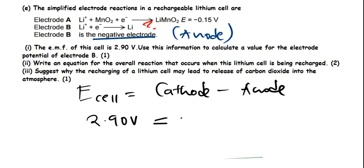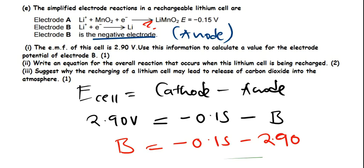The formula for determining the E cell or EMF is cathode minus the value of the anode. The E cell is 2.90 volts. The cathode is the other one, -0.15 volts. And for the anode, we can call it B - we don't know. If you try to determine the value, you're going to end up with B being on the left, and you end up with -0.15 minus 2.90. This is going to give you -3.05 volts. This is the reduction potential of this reaction.